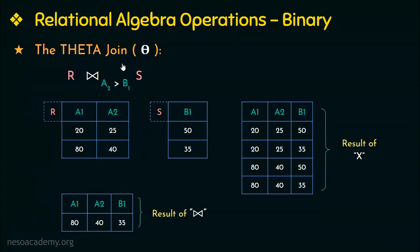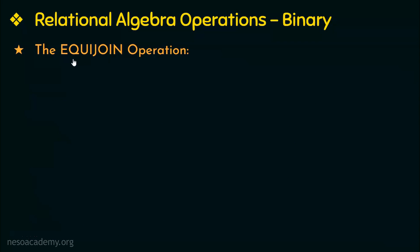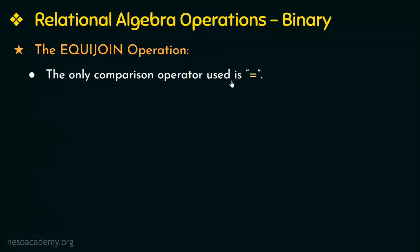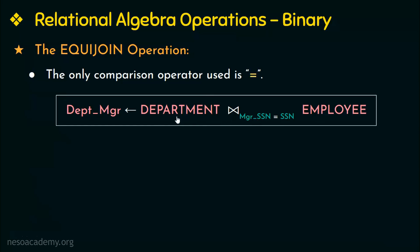Theta join allows us to join or merge two relations based on the condition represented by theta, and it works for all comparison operators. The next variation is the equi join. Most commonly we use joins with equality comparisons in the join condition. Those join operations where the only comparison operator used is equal to are called equi join. We already saw the department and employee example where the join condition uses only equal to.